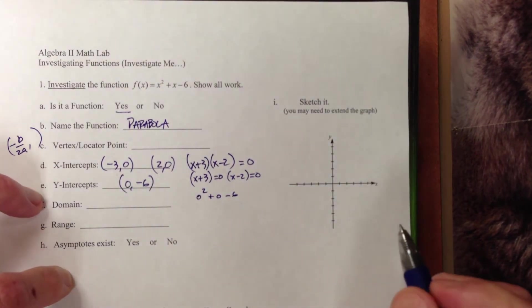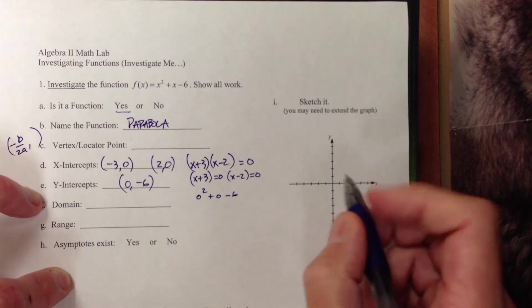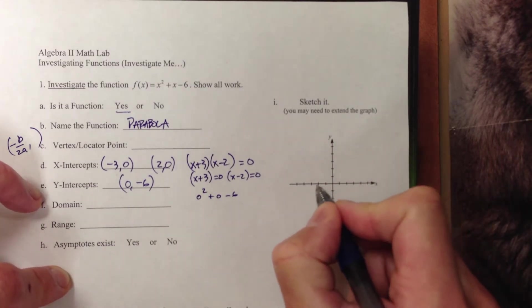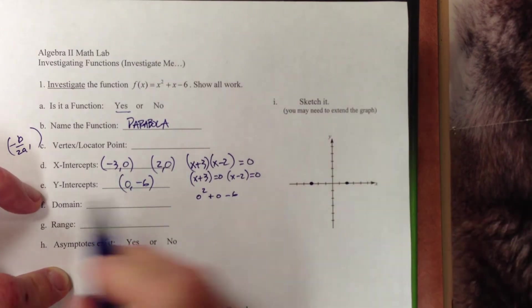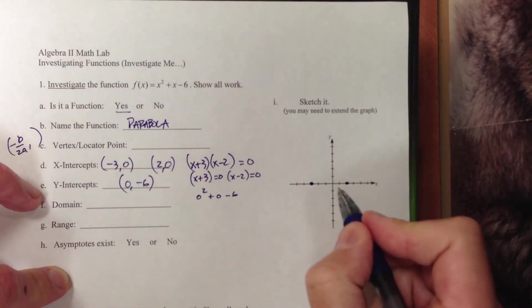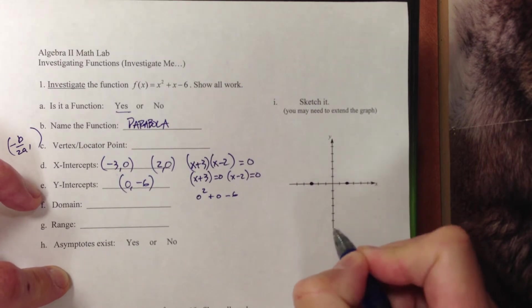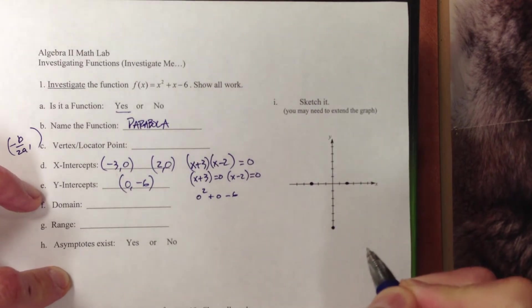I can put some of these points onto my graph now and take a look at how it's shaping up. So I get negative 3, 0. I get positive 2, 0. I get a y-intercept of 0, negative 6. Negative 1, 2, 3, 4, 5, 6.